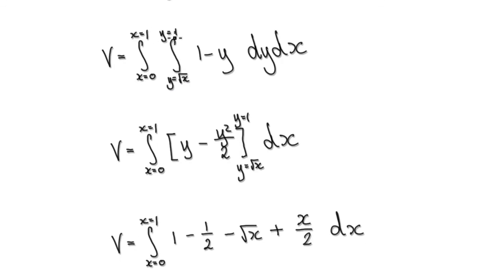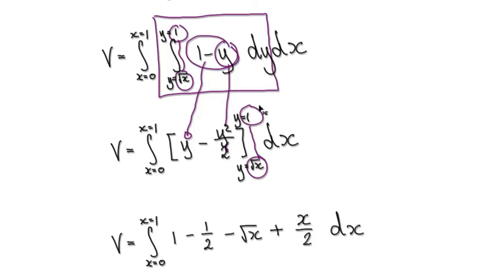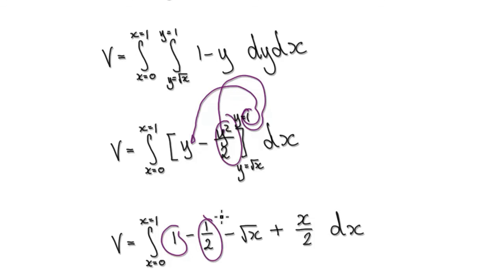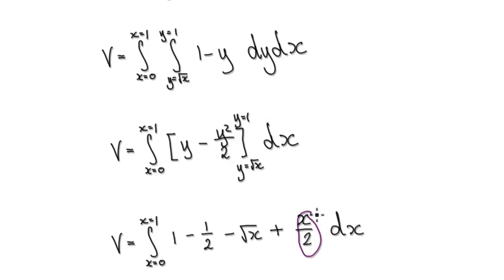Now looking at the y integral, integrate with respect to y. That gives y minus y squared over 2, evaluated from square root of x to 1. Putting 1 in gives one half; putting square root of x in gives x over 2. Taking away the negative gives a positive, so that simplifies to one half minus x over 2.